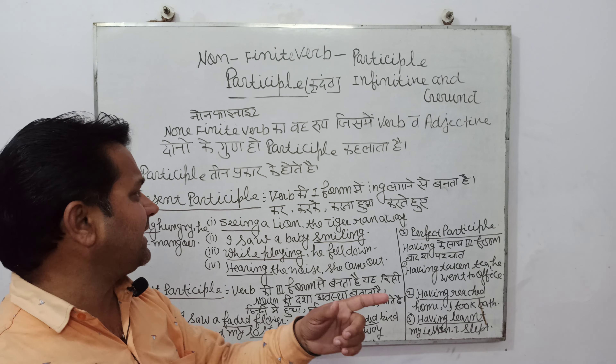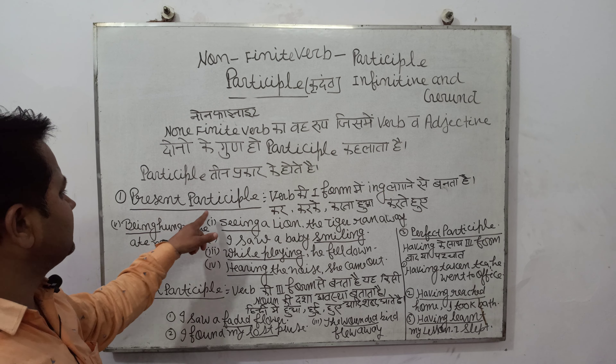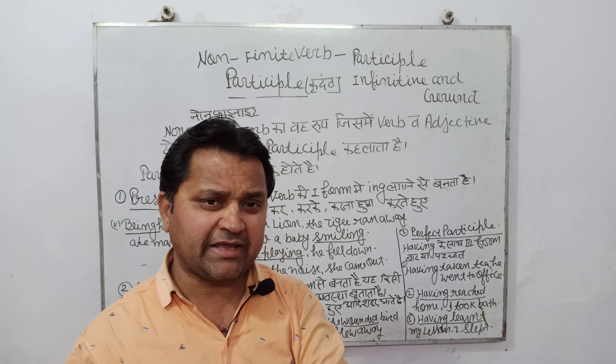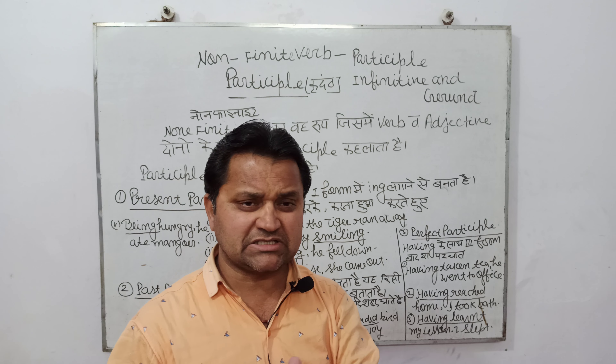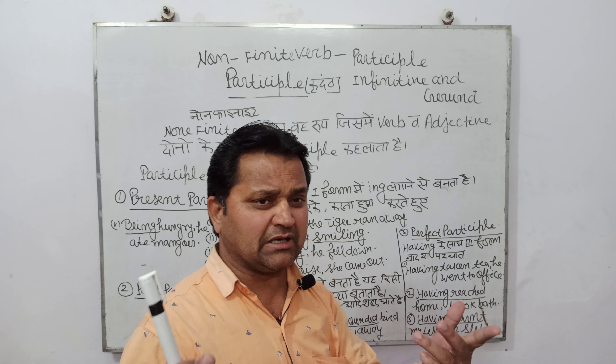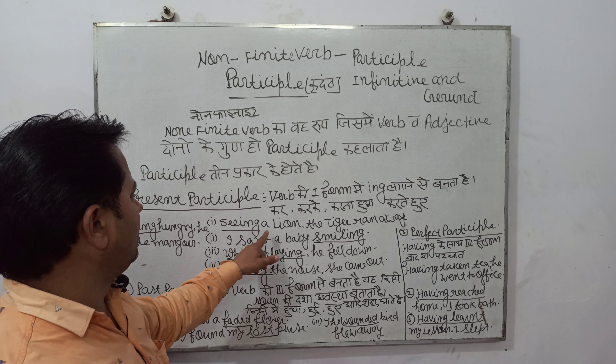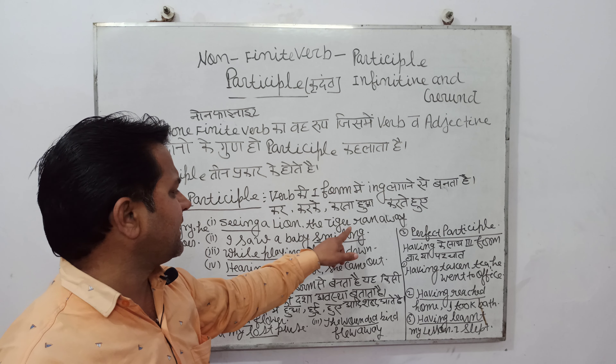Ab dekh lete hain kinds of participle. Participle teen prakar ke hote hain. Pehla prakar hai — present participle. Verb ki first form mein 'ing' lagane se present participle banta hai. Aur present participle ke Hindi vaakyon mein kar, karke, karta hua, karte hue aadi shabad aate hain. Dekh lete hain example.